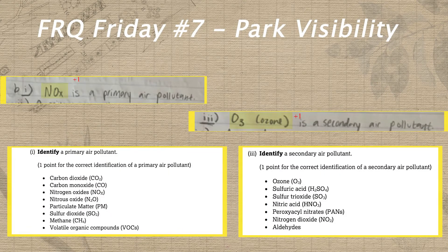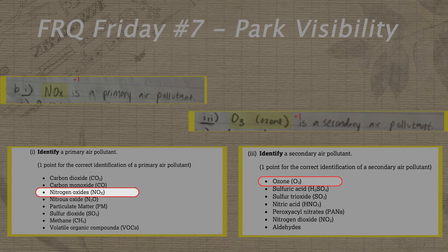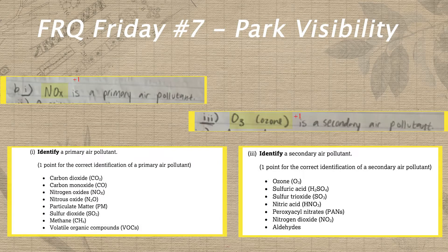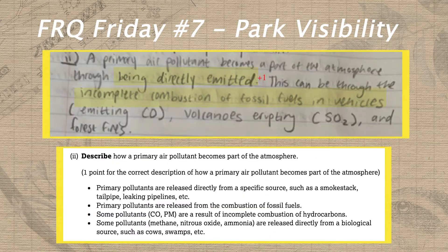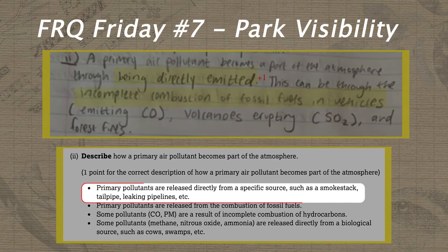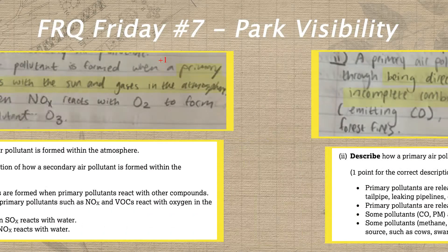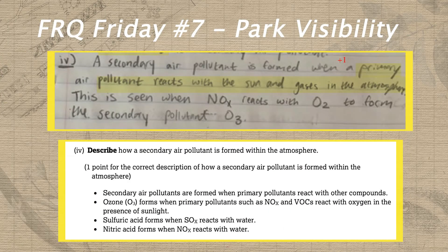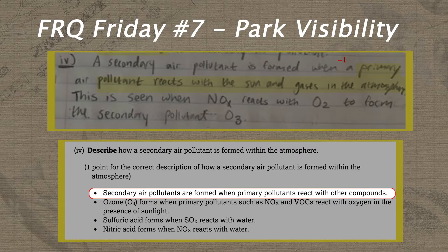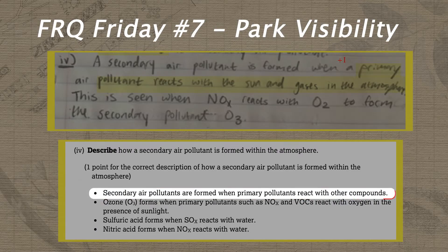She earned all four possible points in this section of the FRQ. In parts one and three, she earned two points by clearly identifying NOx and ozone as primary and secondary air pollutants respectively. In part two, she correctly described that primary air pollutants are emitted directly from processes such as the incomplete combustion of fossil fuels. And in part four, she earned another point for correctly describing how secondary air pollutants form when a primary air pollutant reacts with the sun and gases in the atmosphere.